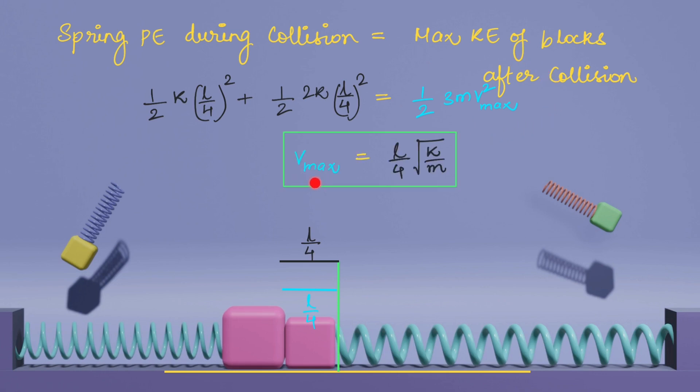Solving this, we get the maximum speed of the combined mass is L by 4 under root k by m. So the maximum velocity of the combined mass occurs here. I want you to observe that. Let me replay the animation.